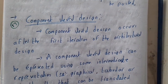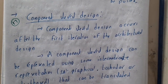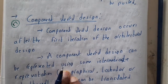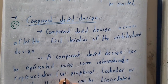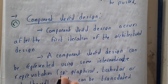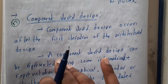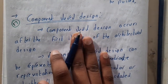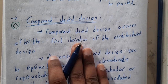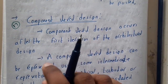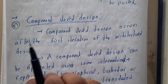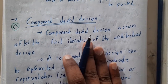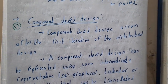Hello guys, we are back with our next lecture. In this lecture, let us go through component level design. Previously we discussed about the architecture design phase. From architecture design, you'll be converting it into component level design. Remember, for every iteration of architectural design, you'll be pushing that architectural design into component level design and it will also start its processes.